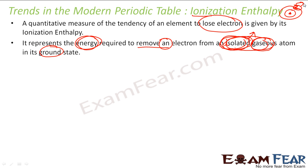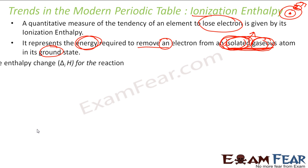For example, if the atom is in crystal or solid form, to take out one electron we first have to remove it from the crystal, which requires a different kind of energy and makes things complex. To make things easier, we assume it is an isolated gaseous atom and from that we remove one electron in the ground state.